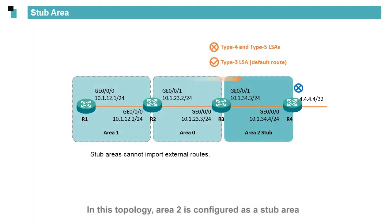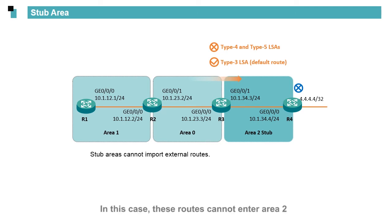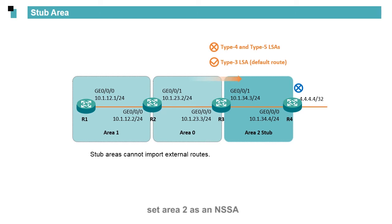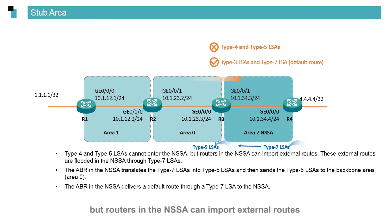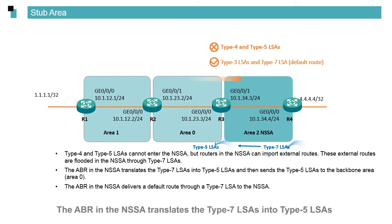In this topology, Area 2 is configured as a stub area and some external routes are imported by R1. In this case, these routes cannot enter Area 2. If R4 needs to import a small number of external routes, set Area 2 as an NSSA. If Area 2 is configured as an NSSA, Type 4 and Type 5 LSAs cannot enter the NSSA, but routers in the NSSA can import external routes. These external routes are flooded in the NSSA through Type 7 LSAs. The ABR in the NSSA translates the Type 7 LSAs into Type 5 LSAs and then sends the Type 5 LSAs to the Backbone Area, Area 0.